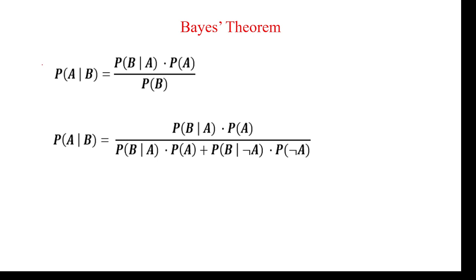So, this is equation one: P(A|B) is equal to P(B|A) multiplied by P(A) divided by P(B). I will give you the explanation and proof. The second form is using total probability — one version uses conditional probability and the other uses the total probability theorem.